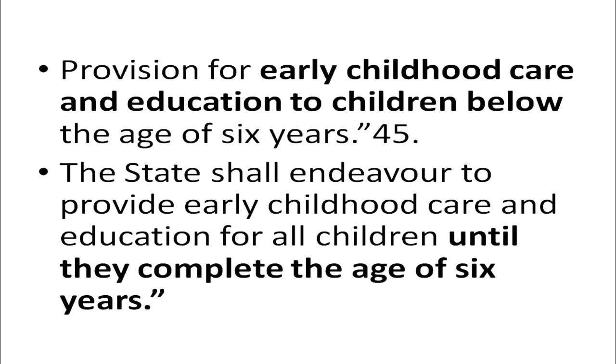So a provision was made for early childhood care and education to children below the age of 6 years. The state shall endeavour to provide early childhood care and education for all children until they complete the age of 6 years. This is now entrusted with the state — it is their responsibility to take constructive steps, measures, and strategies to ensure that early childhood care and education is provided. Because unless the learner is ready to enter the school, he will not be able to succeed well in school. So that learner readiness and community readiness has to be prepared, and the state has to play a significant role in that.